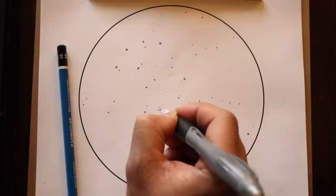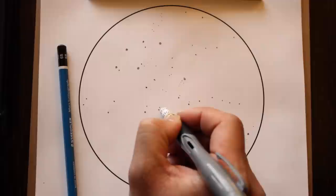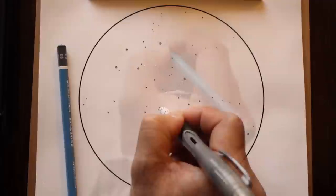To sketch glows, use the blending stump to lightly spread out the graphite in a circular motion. You can also use your finger to slightly smudge the graphite.